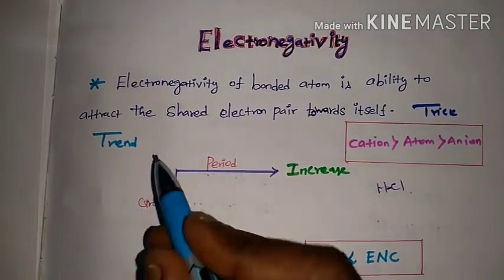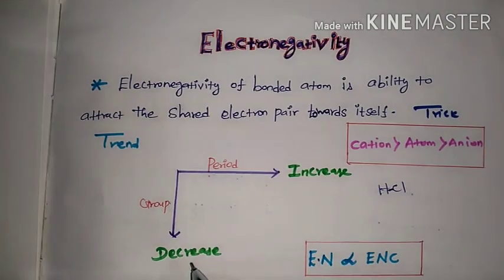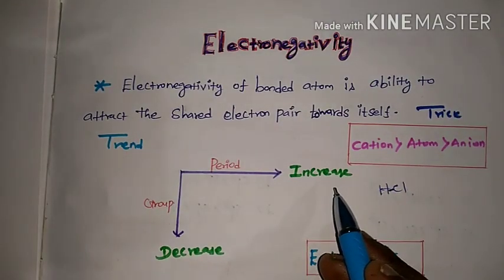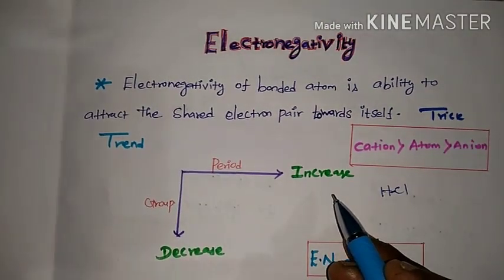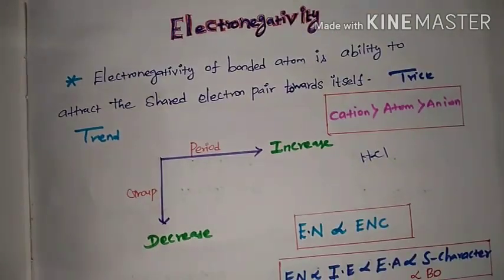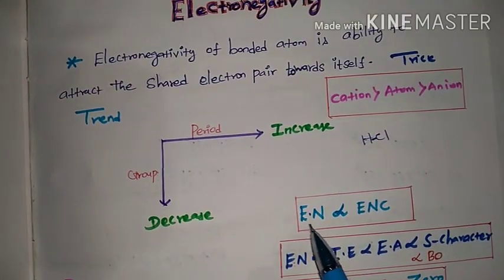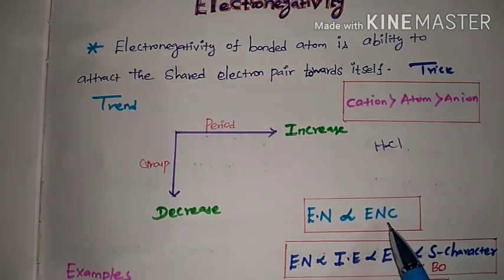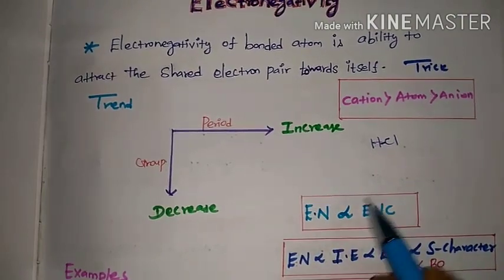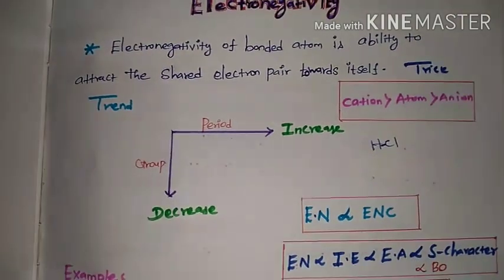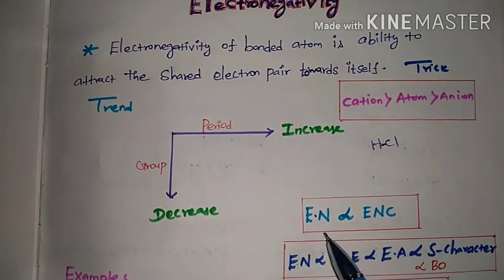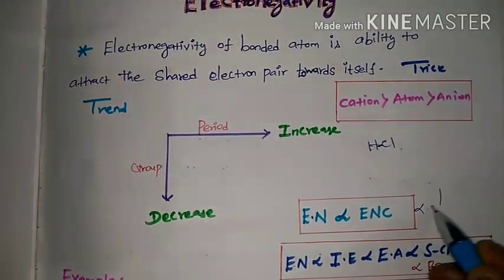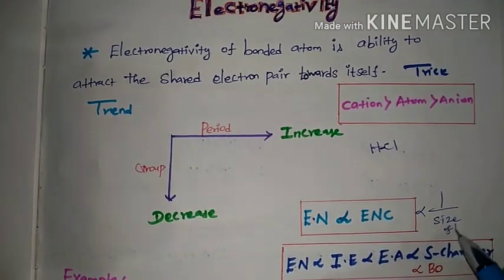When the size is more, the electronegativity decreases. Electronegativity is directly affected by nuclear charge and inversely proportional to the size of the atom.